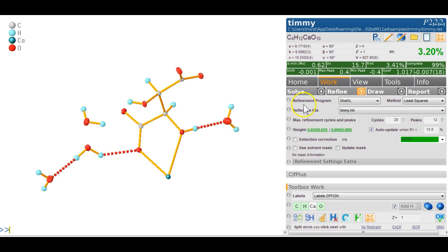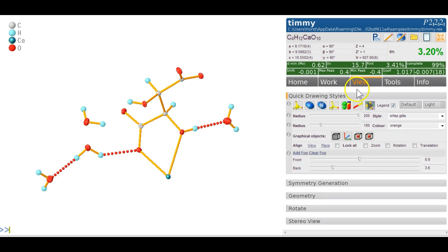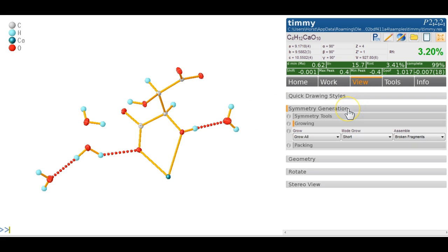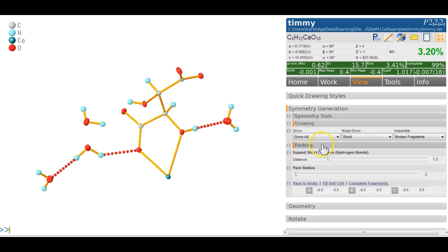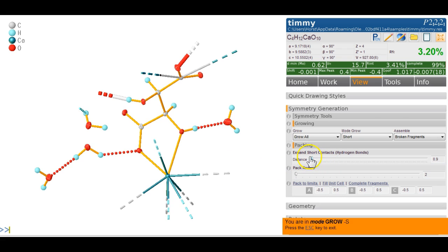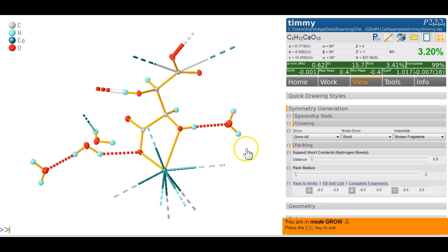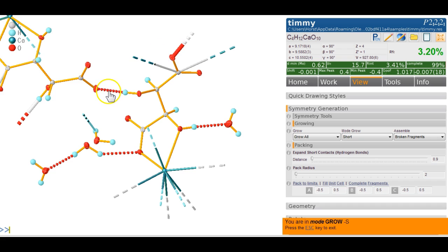If I go back to fuse, there's another tool in view and symmetry generation where we can look at the growing. Packing is what I want. We can expand short contacts—the hydrogen bonds. Using that slider carefully, we can see the first and shortest hydrogen bond. We can click on this and this will generate that bond on this side and that bond on that side.